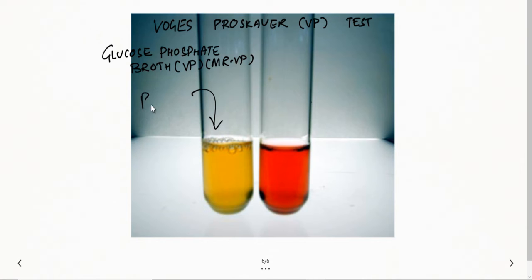We inoculate our bacterial suspension into this medium. The bacteria will convert the glucose into pyruvic acid. Pyruvic acid has different metabolic pathways, and bacteria via an alternative pathway will convert this pyruvic acid into acetoin. After an incubation period at 37 degrees Celsius for 48 hours, we need to detect this acetoin.